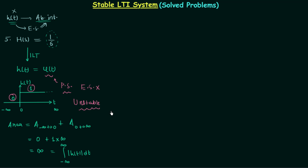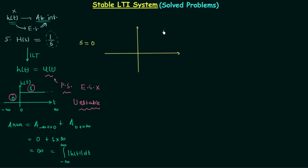Now for method number two, we first find the poles from the transfer function. The transfer function is 1/s, so the pole is equal to zero — there is only one pole at s = 0. We plot this on the s-plane, where the x-axis is sigma (real axis) and the y-axis is jω (imaginary axis). The pole exists at the origin.